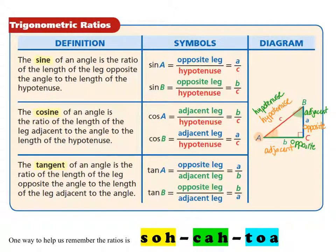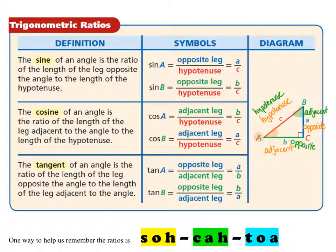There's another trigonometric ratio called the cosine. The cosine is the side length adjacent to the angle over the hypotenuse. The cosine of angle A is the adjacent side, side B, over the hypotenuse, side C. The cosine of angle B is the adjacent leg, side A, over the hypotenuse, side C. Tangent does not involve the hypotenuse — it's the opposite over the adjacent. Opposite over adjacent for angle A would be side A over side B; for angle B, it would be side B over side A. You can see those are reciprocals of one another.